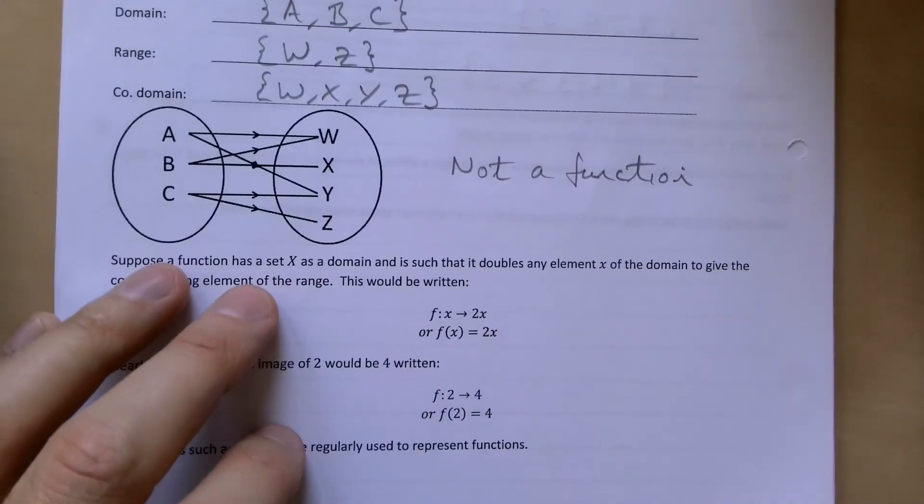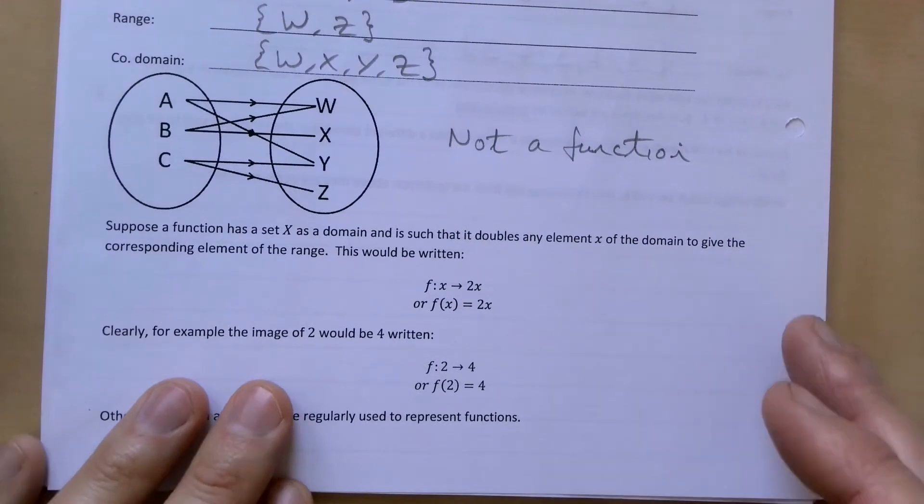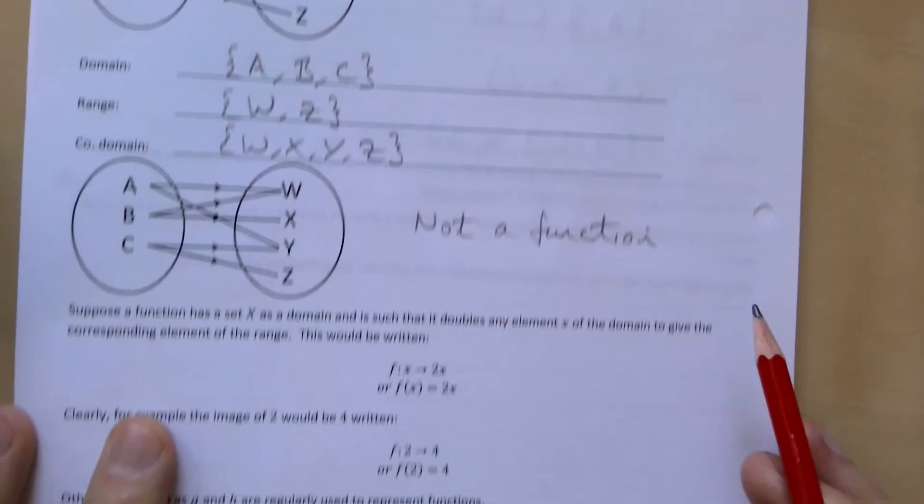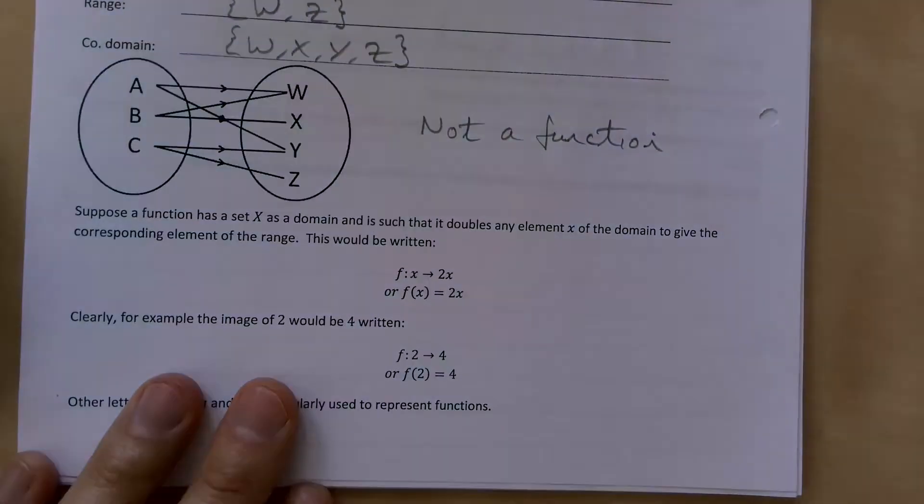This is A2PureMazNotes. We're in unit 5 and we're taking a look at functions. We've just run through the basics with our domain, range, and codomain in the previous video. Now on to a few simple examples.